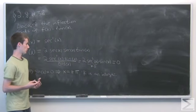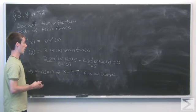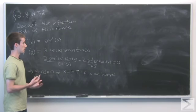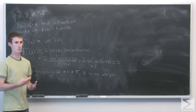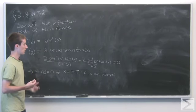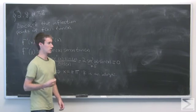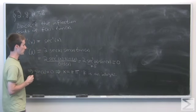So we need to look at the points k pi, where k is an integer, and see if the sign of the second derivative goes from negative to positive, or positive to negative, or if the sign doesn't change at all, then it's not an inflection point.